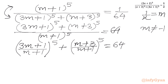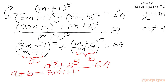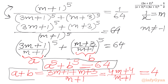Now we can use substitution. Let a = (3m+1)/(m+1) and b = (m+3)/(m+1). So the first equation is a^5 + b^5 = 64. The second equation comes from a + b: (3m+1 + m+3)/(m+1) = (4m+4)/(m+1) = 4. So we have two equations: a^5 + b^5 = 64 and a + b = 4.